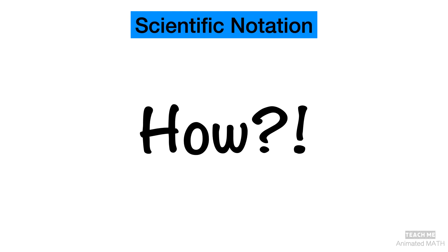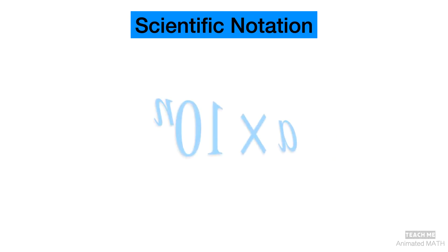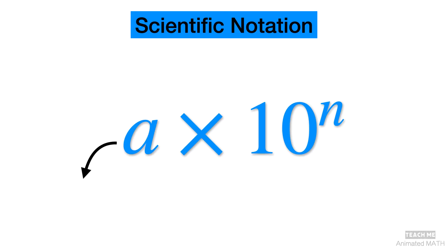Scientific notation follows the form a times 10 to the nth power. The absolute value of a can be any real number between 1 and 10, and n should be an integer.